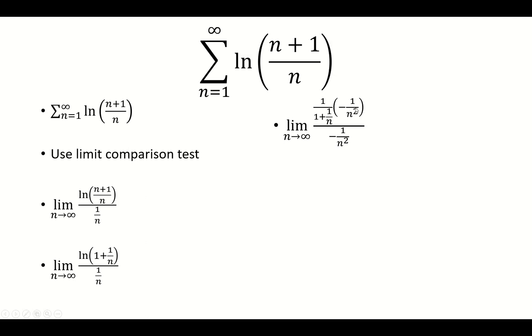Notice the negative 1 over n squared is going to cancel, and I'm left with 1 over 1 plus 1 over n.